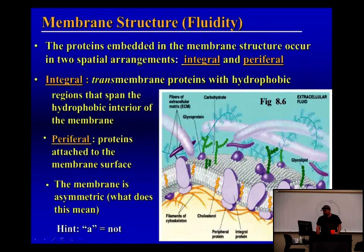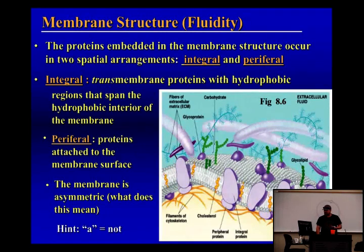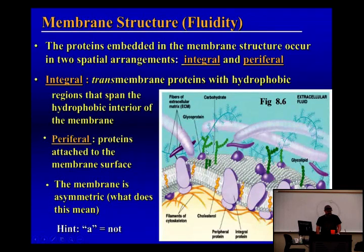And then we talked about certain proteins and lipids that can have sugars attached. So here's a phospholipid that has these hexagons attached to it — those represent glucose, a chain of glucose. We call that glyco, for sugars. So that's a glycolipid because it's a lipid attached to sugars. So what would a protein attached to a sugar be called? A glycoprotein, right?